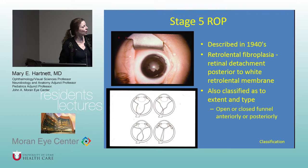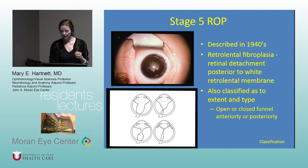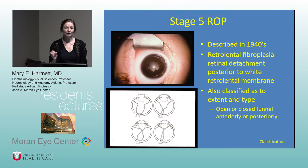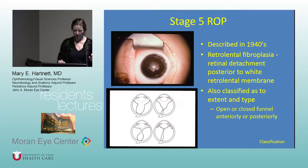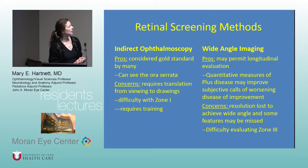Stage 5 ROP — the retinal detachment can have all different configurations. The open funnel on the upper left has better outcomes, whereas the tight funnel at the bottom is very hard to treat. You cannot make a hole in the retina in these kids — it's not like adult retina where you flatten it, make a hole, drain fluid, and apply laser. In kids, you must release the traction, often staging the procedures, and over time — months — the retina settles back.